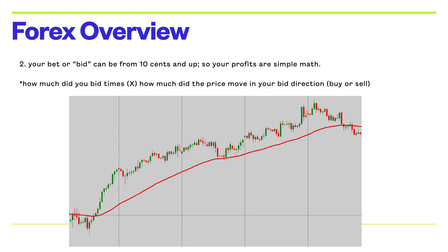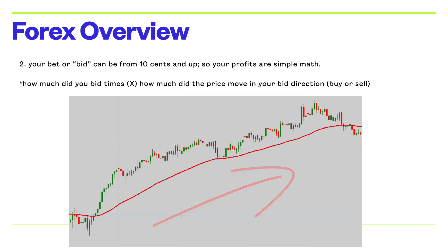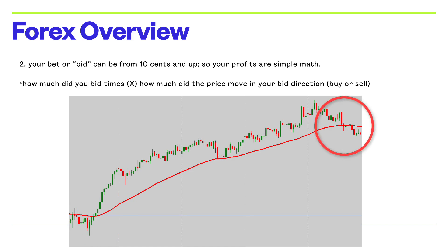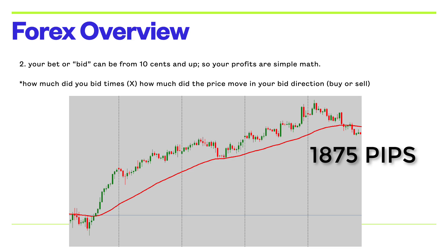Your bid can be from $0.10 up — you can bid $0.10, you can bid $1,000. So your profits are simple math: how much did you bid times how much did the price move in your bid direction, buy or sell? If we placed a buy in the lower left-hand corner and then exited the trade when the price came down below that moving average line in the upper right-hand corner — this is an actual live chart that I measured and took a screenshot — you would have earned what's called 1,875 pips.